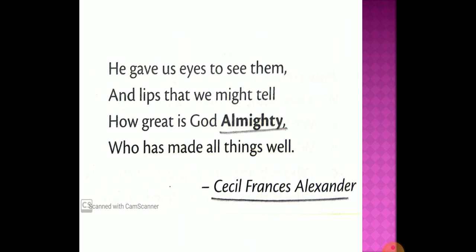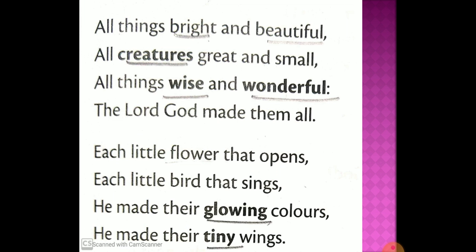Now I am going to read this poem again and I will tell you the meaning of the words which I have outlined so that it will be easy for you to learn. All things bright and beautiful, all creatures — creatures means living things that can move around, such as human beings, birds and animals. Great and small, all things wise and wonderful — wise and wonderful means clever and very good. Wonderful means very good or pleasant. The Lord God made them all. Each little flower that opens, each little bird that sings, he made their glowing colors — glowing means bright or shining. He made their tiny wings — tiny means very small.